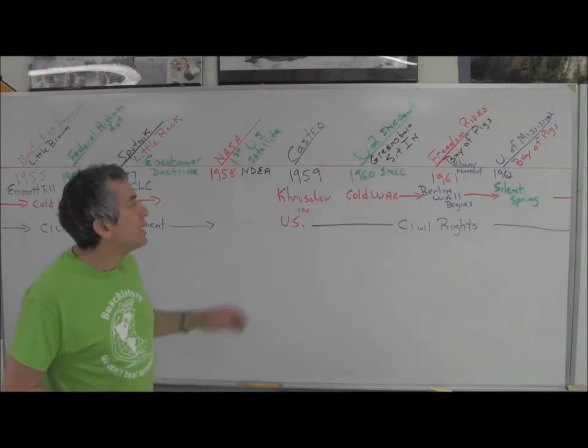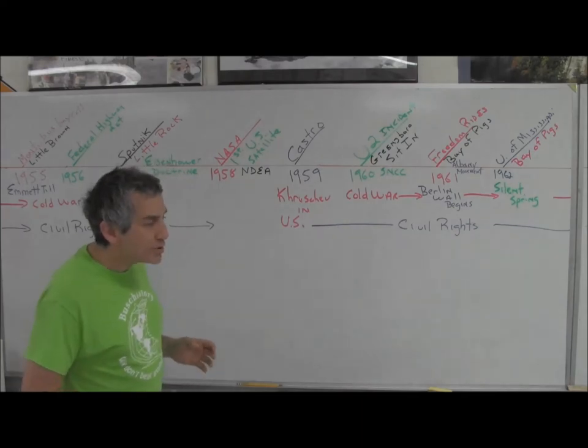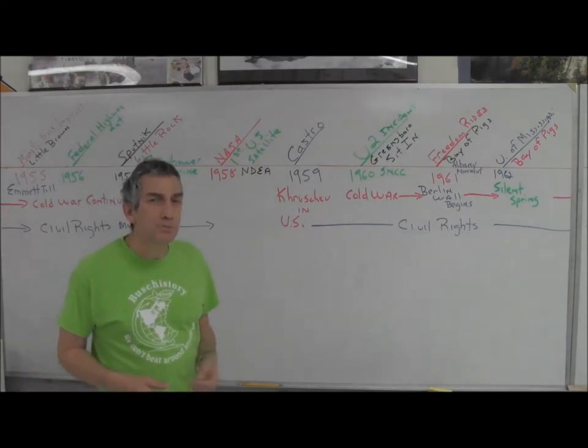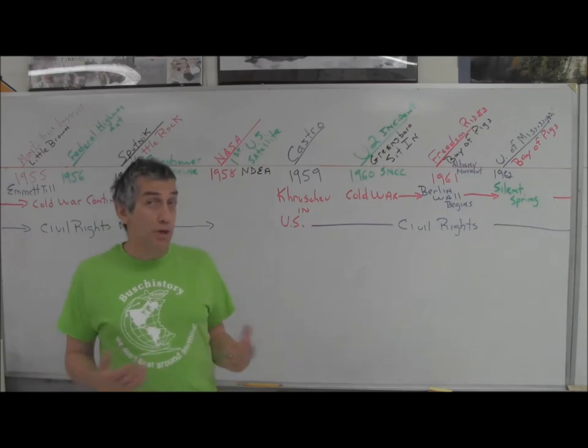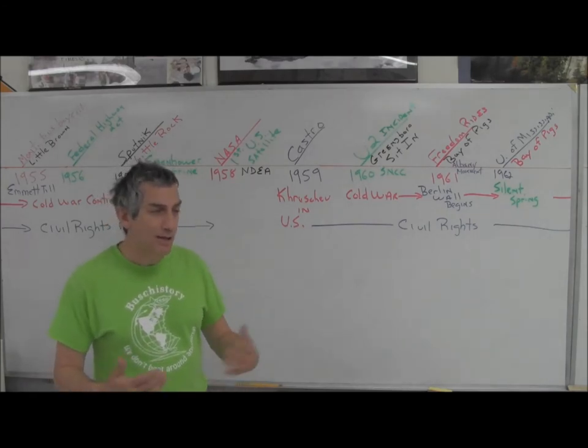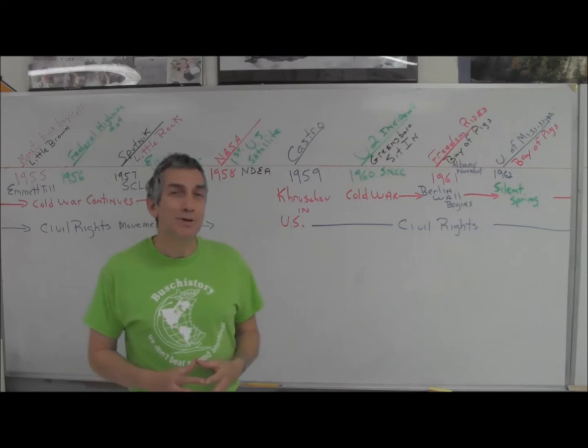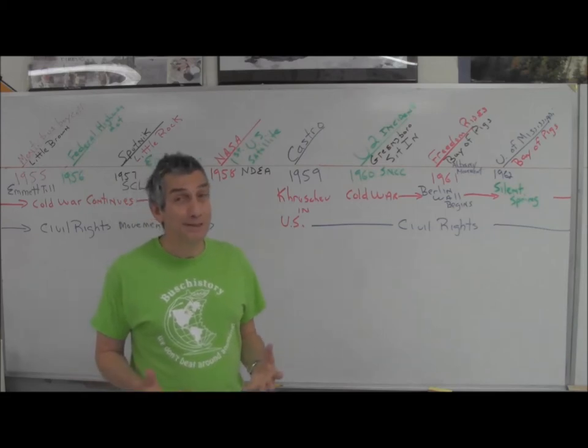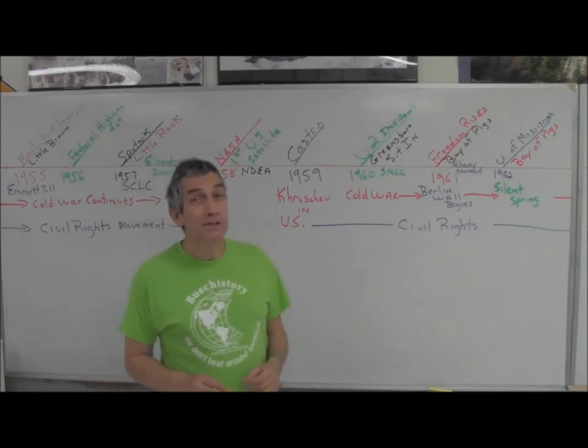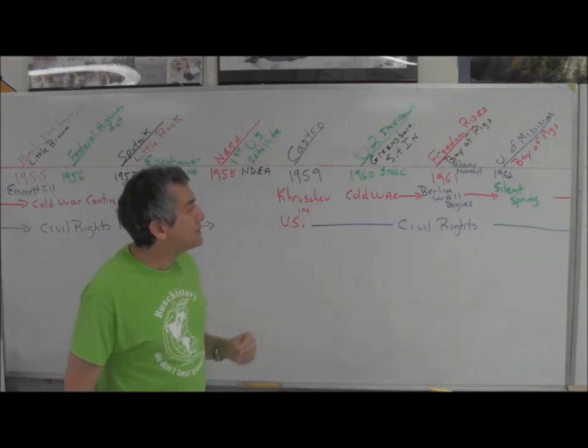We're going to get the U-2 incident in 1960 when the Soviets shoot down one of our spy planes. We claim we don't have any spy planes, but then they march out Gary Powers, the pilot, and all of a sudden we look pretty silly. It's an embarrassing incident for the Eisenhower administration.